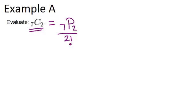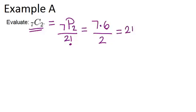Now 7P2 is 7 times 6, and 2 factorial is just 2 times 1, which is just 2. So we're going to do 7 times 6 and then divide by 2, and we get 21.